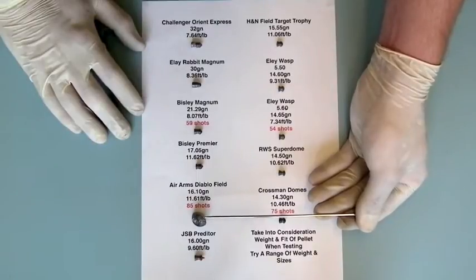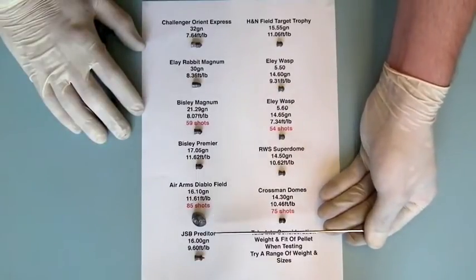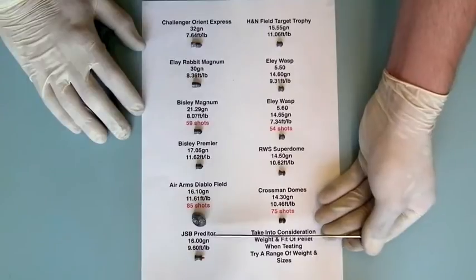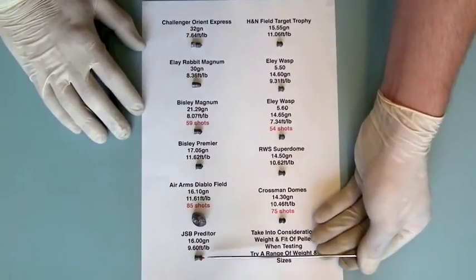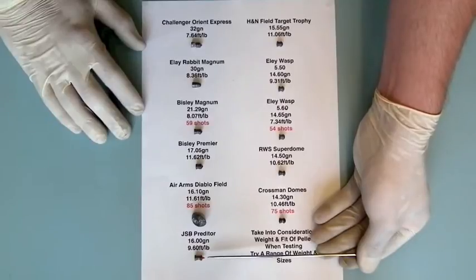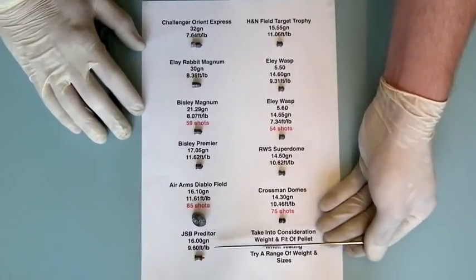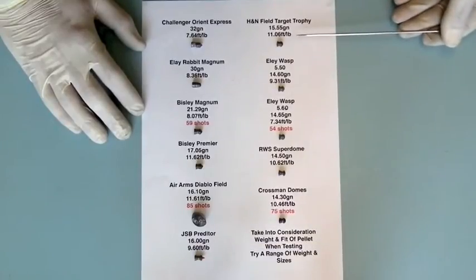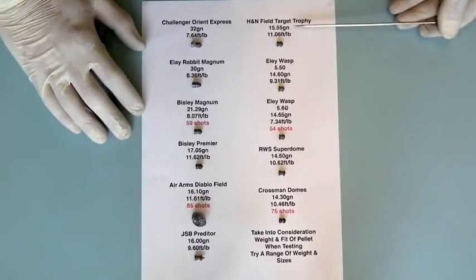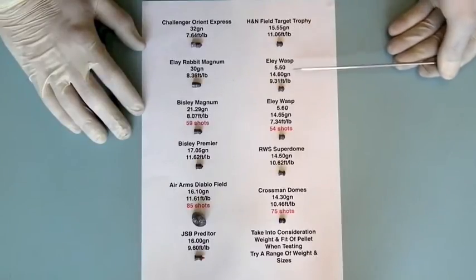Here's the JSB Predator with a little plastic nose cone—I must say a pellet that I wouldn't actually use myself, but some people might like it—and that was doing 9.6 foot-pounds.